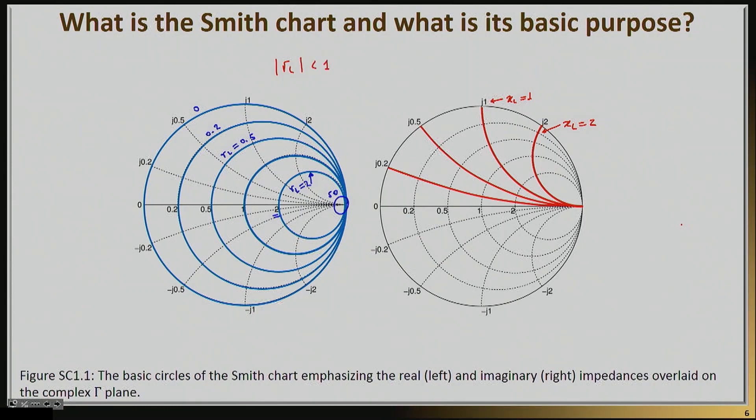Remember once again, that this guy here is actually the complex plane of gamma. So this is the real part of gamma L, and this is the imaginary part of gamma L. So clearly there is a circle that essentially contains gamma L magnitude to less than 1. And this is this circle right here. So anything that exists actually within this circle has actually a gamma L magnitude of less than 1.